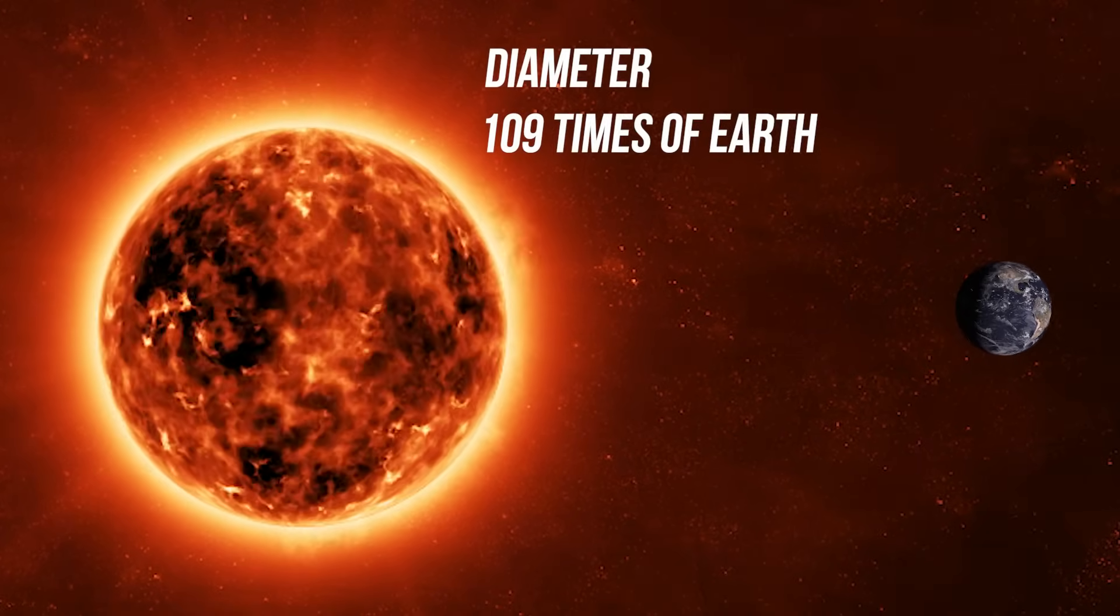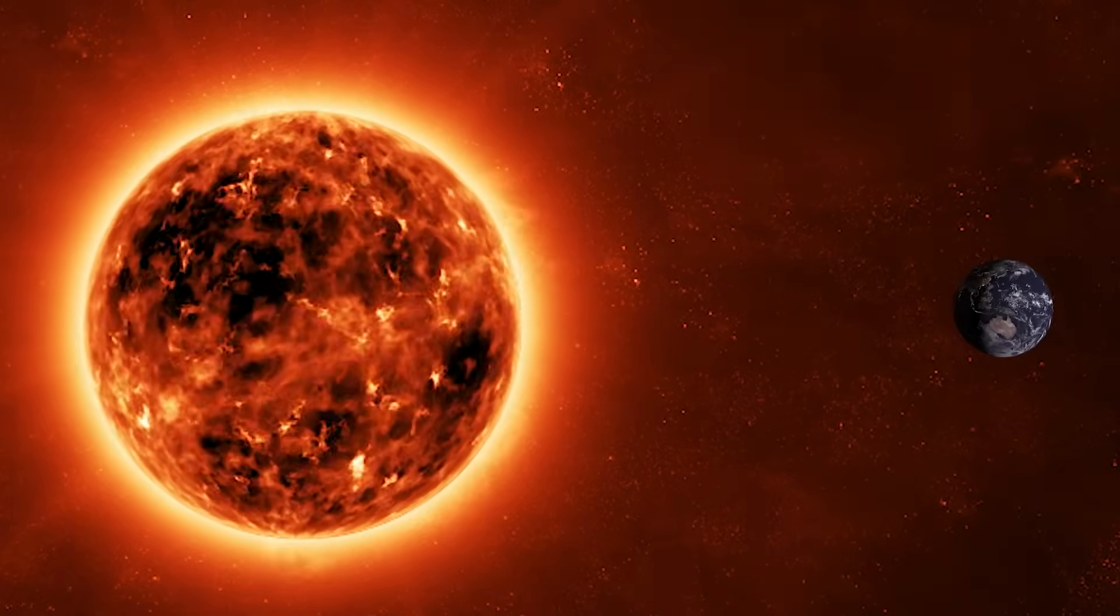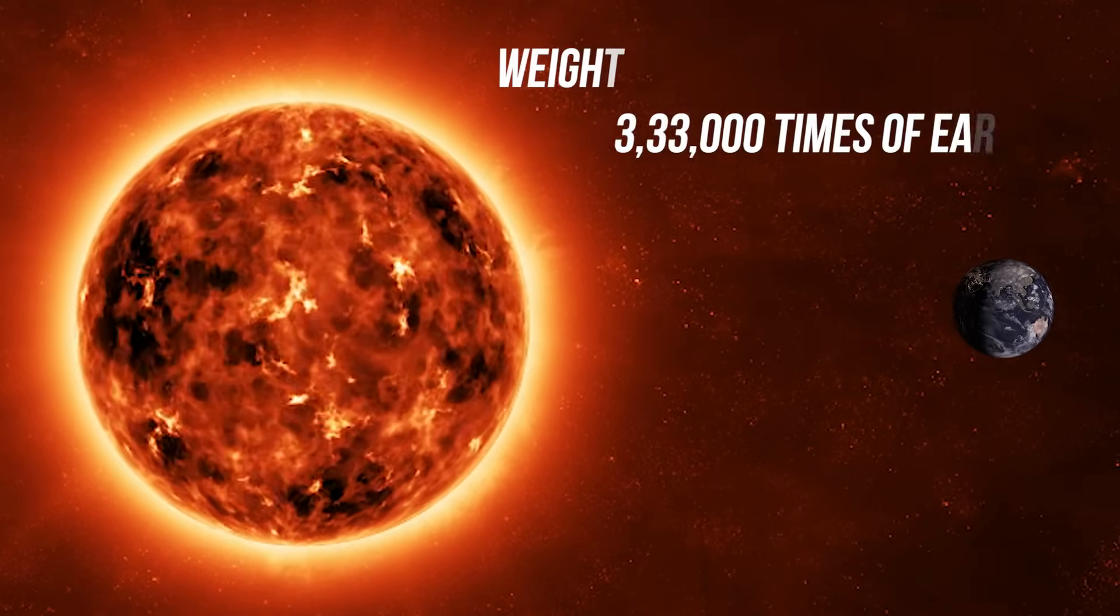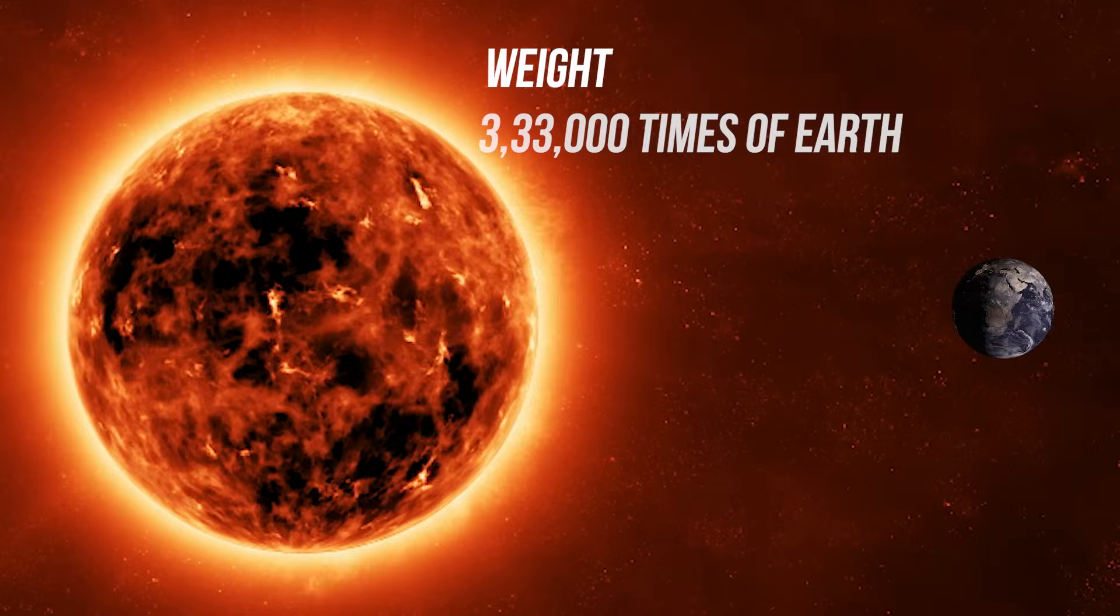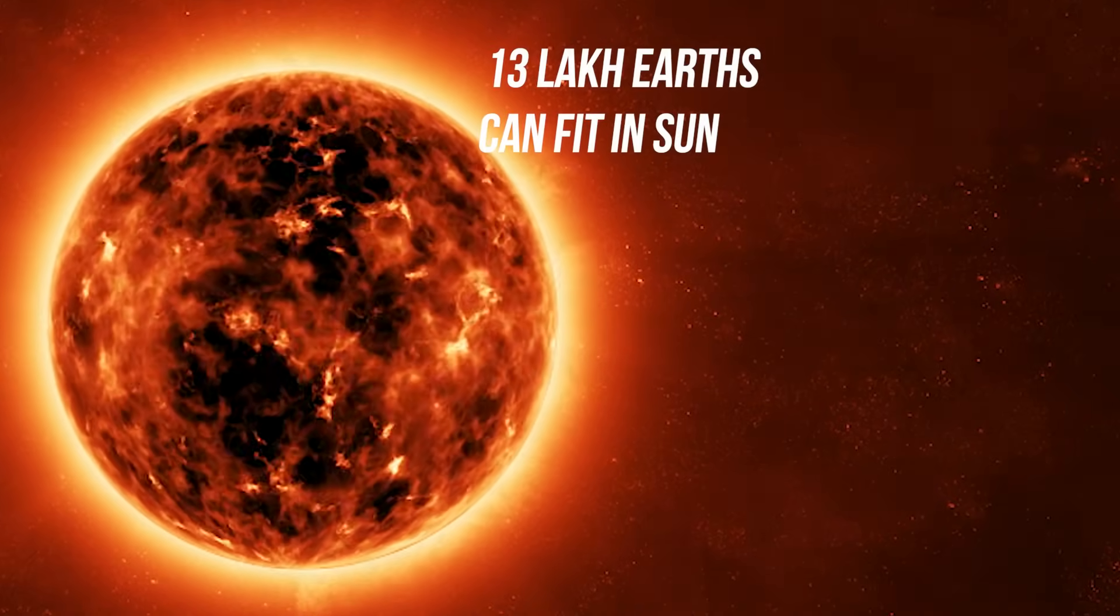Talking about Aditya L1 mission, what does it study about the sun? Before we go there, let's quickly understand a little bit about our sun. The sun's diameter is about 109 times larger than the earth's. Now, when it comes to the weight, if we compare sun to earth, the sun's weight is more than 300,000 times greater. To give you an idea, you could fit around 1.3 million earths inside the sun.